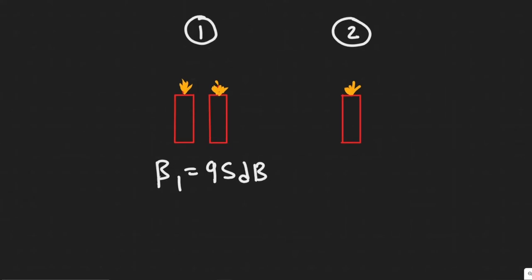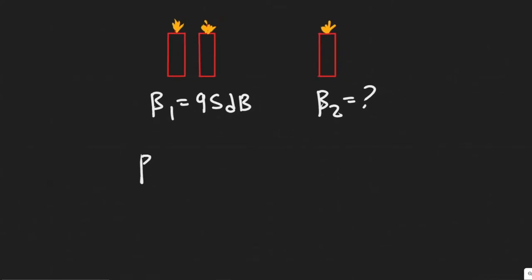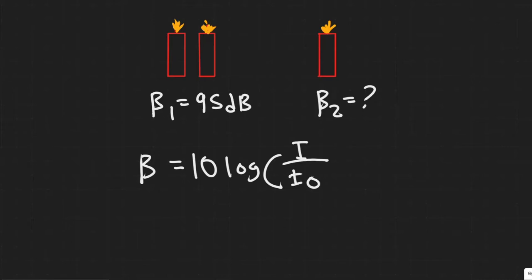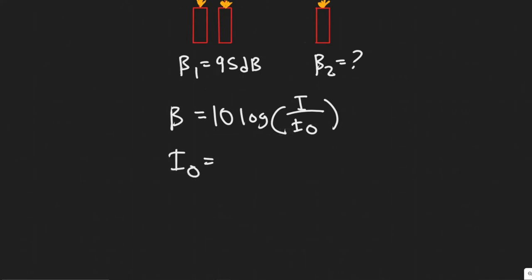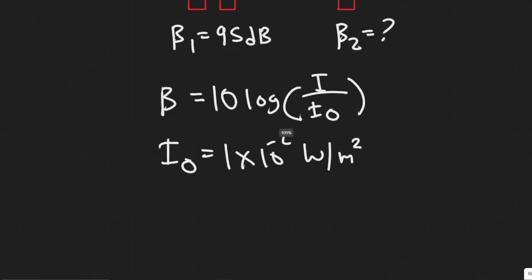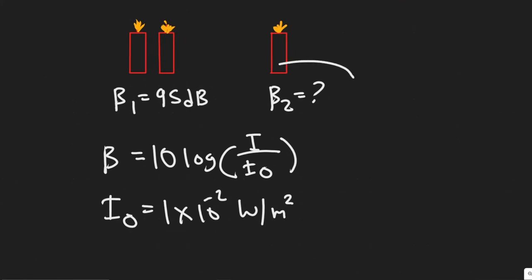What we're trying to find is the sound level when only one is exploded — we'll call this beta two, and that's what we're solving for. The formula for sound level is: beta equals 10 times the log of the intensity divided by the base intensity I₀. This base value is always a constant: 1 × 10⁻¹² watts per meter squared. We're going to create two equations, one for each scenario.